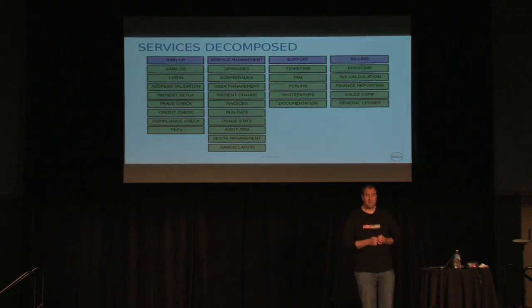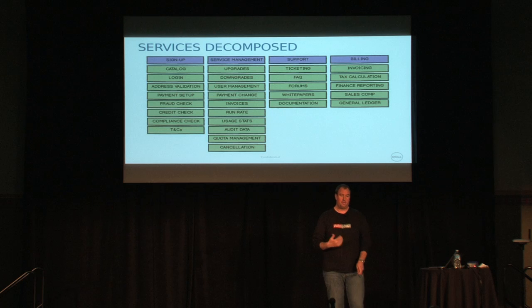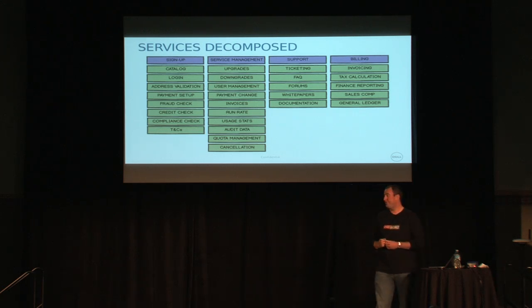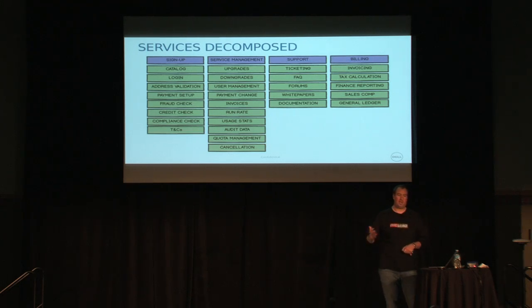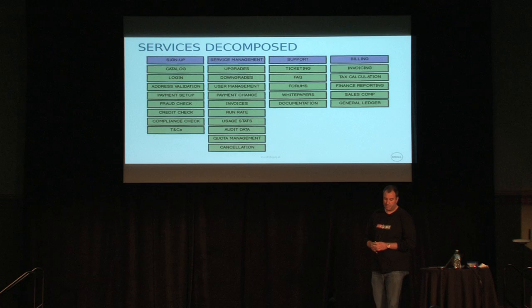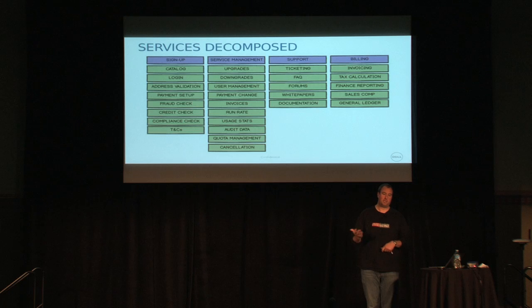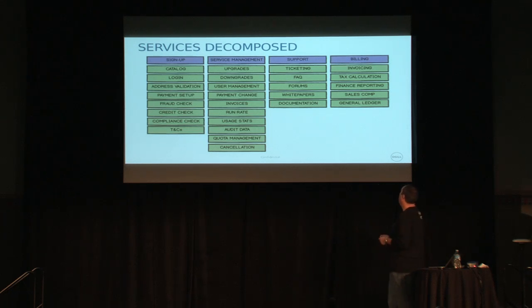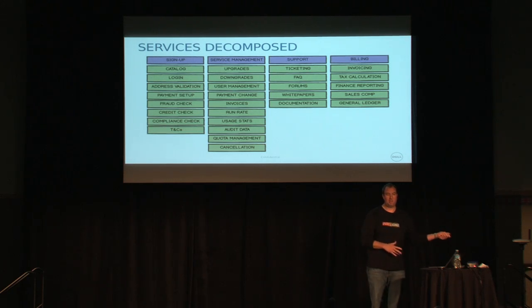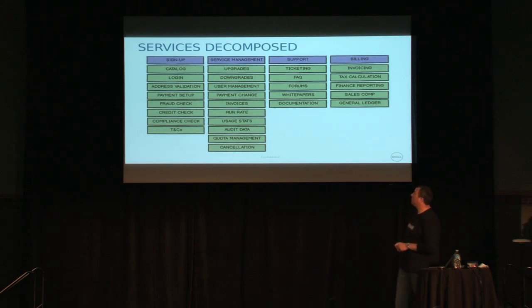Tax calculation is an important consideration — different tax regimes in different states. If you do business in states you've got to charge sales tax, and globally you've got different tax regimes in different countries. We've put a system in place to calculate tax based on where the customer is and where you do business. Sales compensation sounds like a weird one but it's a big consideration — if a salesperson has sold cloud, how do you compensate them once the customer uses it? You typically need a system for that. And general ledger: ultimately all the money you're making goes back into your company's books for financial reporting.